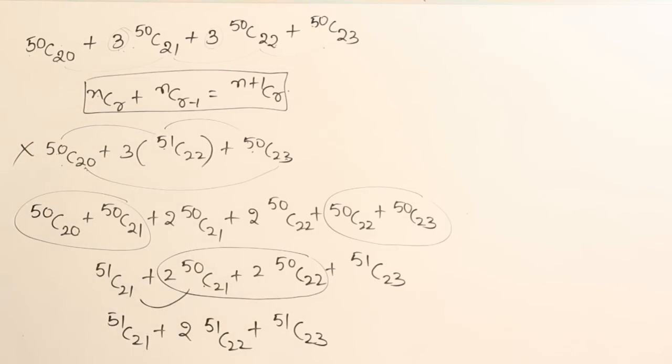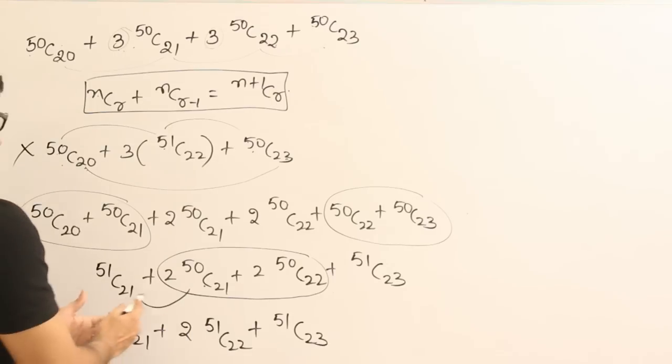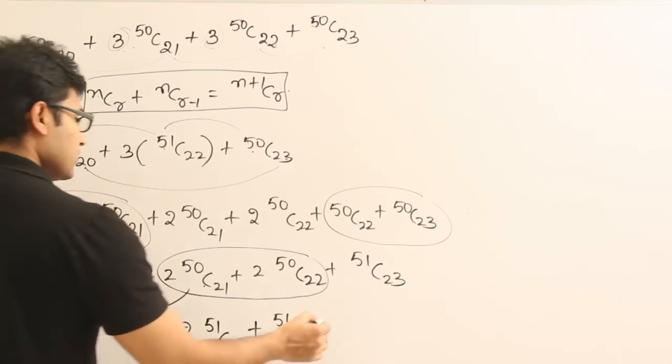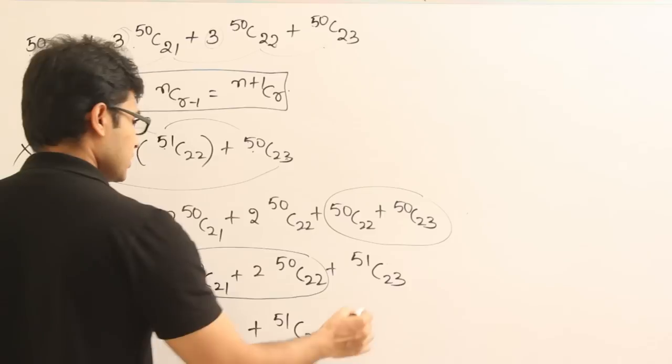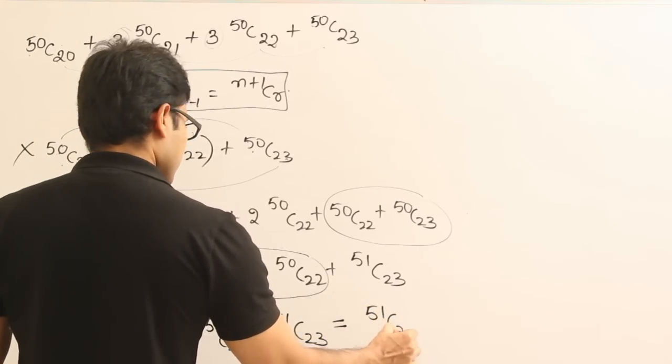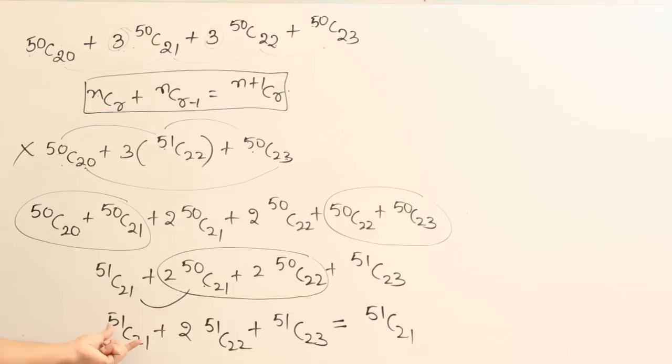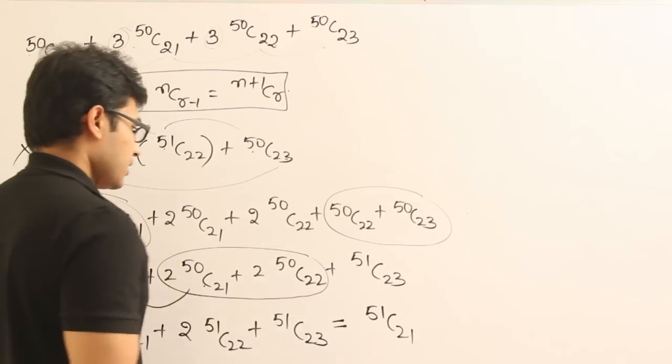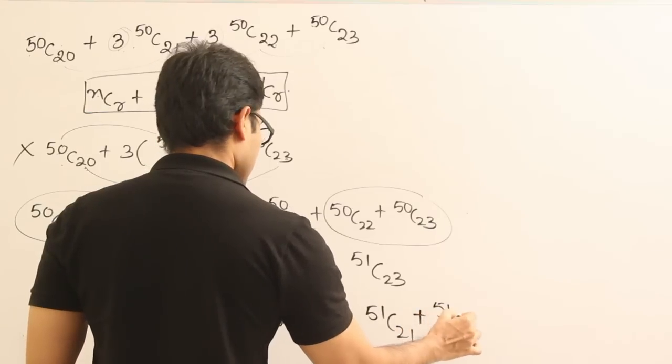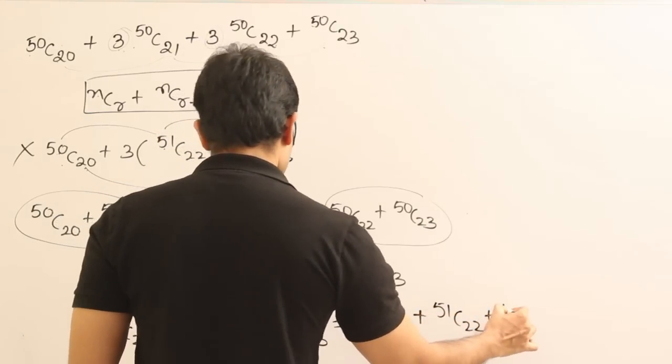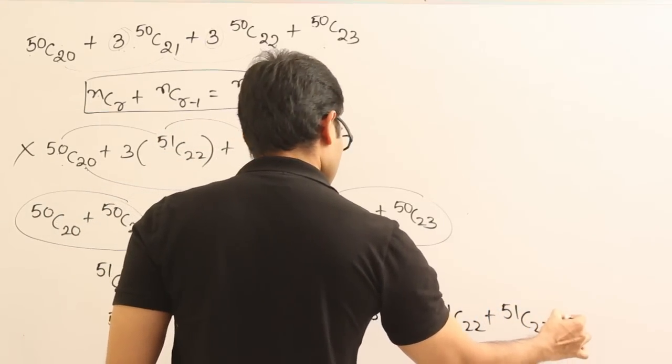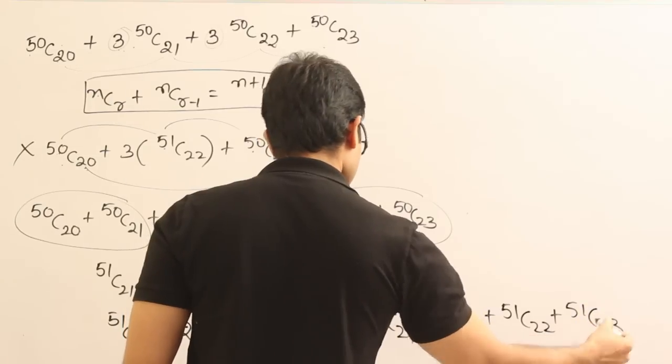Now what can we combine? We can actually divide this into two parts and combine one term with this and combine another term with that. So what I am going to say is, it can be written as 51C21. Are you able to say this? It can be written as, I am just splitting it out into two parts. So plus 51C22 here, plus 51C22 here, plus 51C23. I have just divided this single term into two terms here.